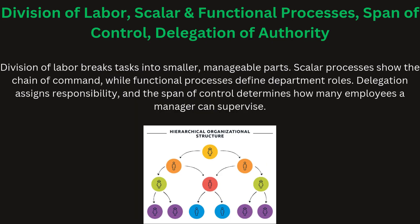Division of labor refers to breaking down work into smaller tasks to increase efficiency. Scalar processes refer to the chain of command within an organization, while functional processes define the specific roles of each department. The span of control refers to the number of employees a manager can effectively supervise. Delegation of authority involves assigning responsibility and authority to subordinates.